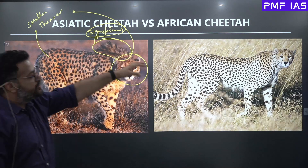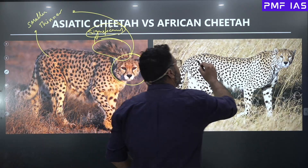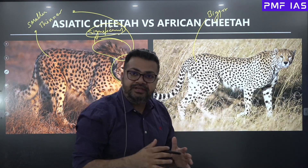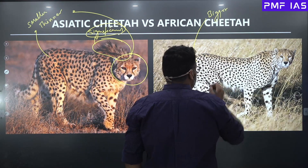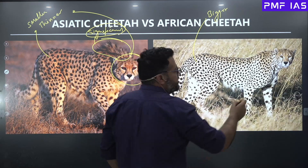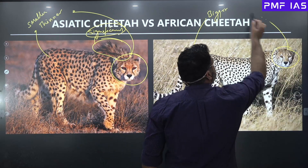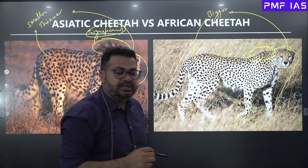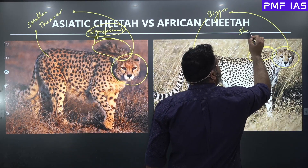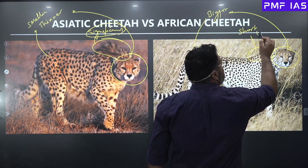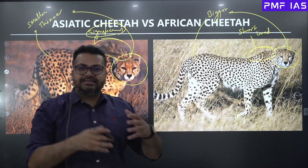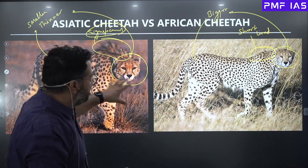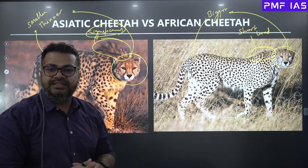Whereas African Cheetahs are comparatively bigger than the Asiatic Cheetahs. Their legs also happen to be longer and their heads are also bigger. Even they do have a mane, but the mane happens to be short-lived — it is not meant to sustain for a very long period. These are some of the tell-tale signs when you compare the African as well as the Asiatic Cheetahs.